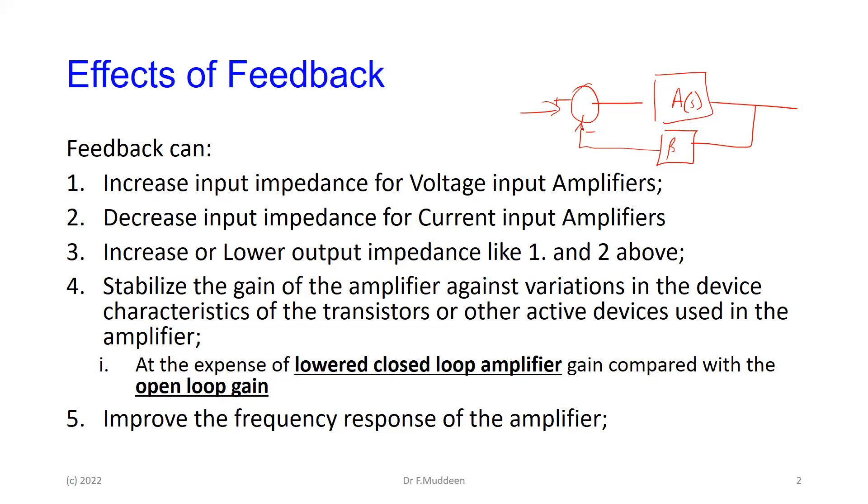For voltage input amplifiers we increase the input impedance, which is good because that reduces loading. For current input amplifiers we decrease the input impedance, which is good because it means more current goes into the amplifier and less remains in the source. And the same thing for the output impedance. It really involved some discussion on Thevenins, and we were more interested in the results.